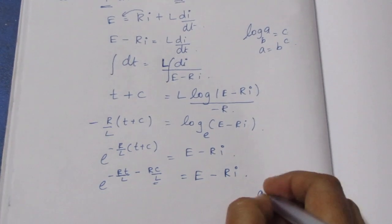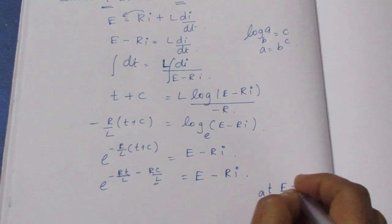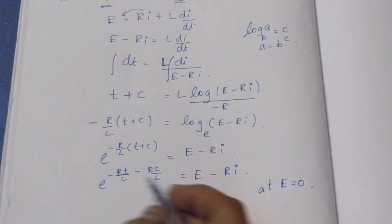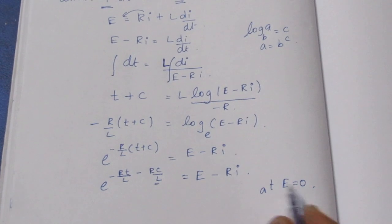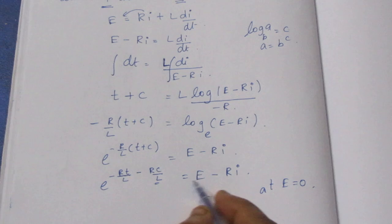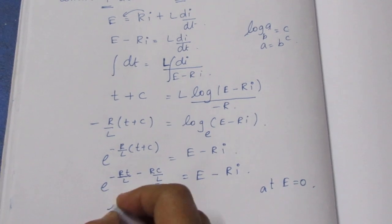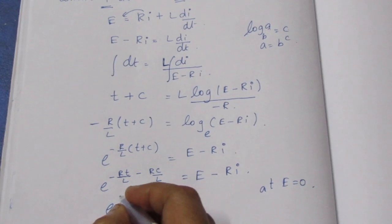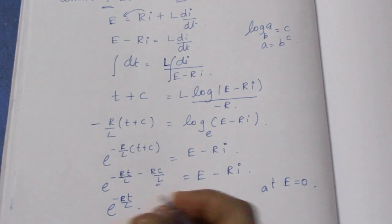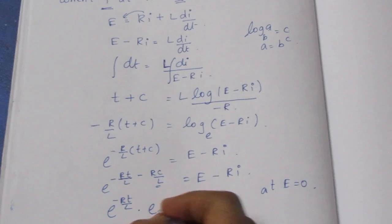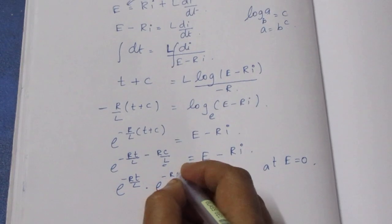Find i at time t when E is equal to 0. So with E equal to 0, we put this back. With minus R, we substitute back and this leads to e to the power minus Rc by L.